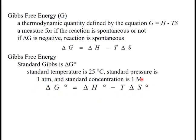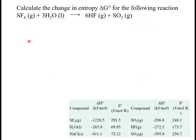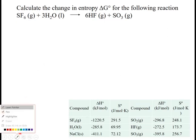Let's do an example of that. In this first problem, it says calculate the entropy - delta G - for the following equation: SF6(g) + 3H2O(l) → 6HF(g) + SO3(g). In this table down here, I gave you delta H and S.